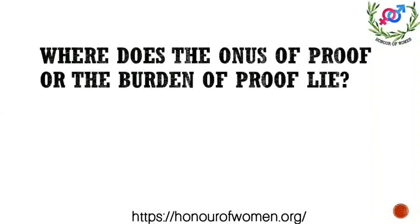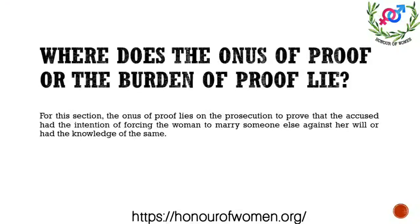Where does the onus of proof or burden of proof lie? The onus of proof means who needs to prove that the accused is guilty. For Section 366, the onus of proof lies on the prosecution to prove that the accused had the intention of forcing the woman to marry someone else against her will, or had the knowledge of the same. The same applies for illicit intercourse — the prosecution needs to prove that the accused had the intention of forcing the woman to marry someone else or have illicit intercourse with someone else. In simple words, it is innocent until proven guilty.